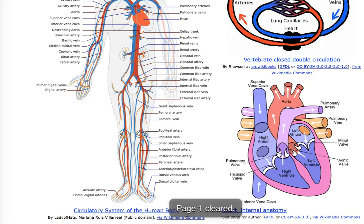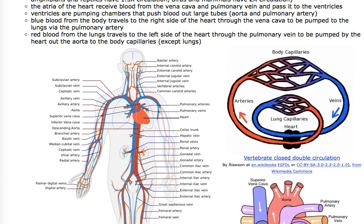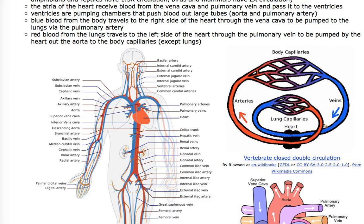Now let's look at the entire diagram of the human body's circulatory system. In terms of color change: blood from the body comes into the right side of the heart, goes into the right atrium, then the right ventricle, and gets pumped to the lungs.